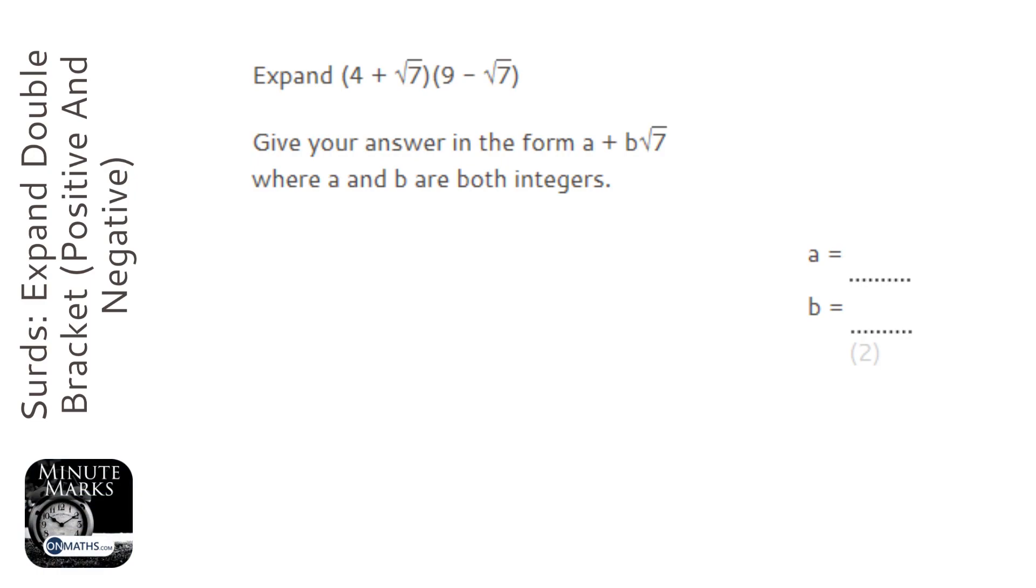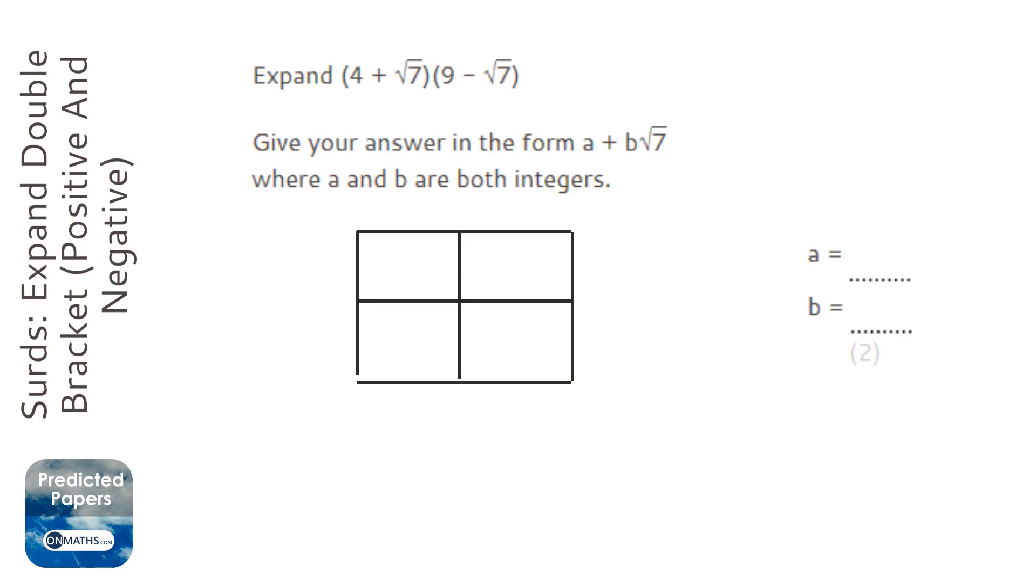Use your preferred method. I'm going to use the grid. But if you want to use foil or anything else, that's absolutely fine. We've got 4 plus root 7 times 9 minus root 7.